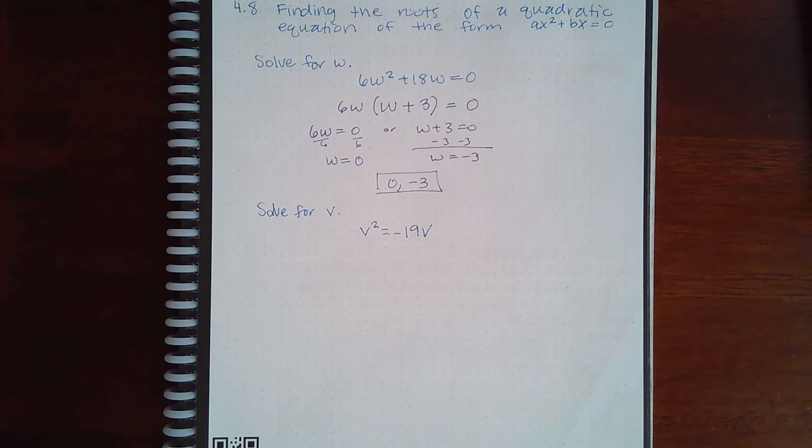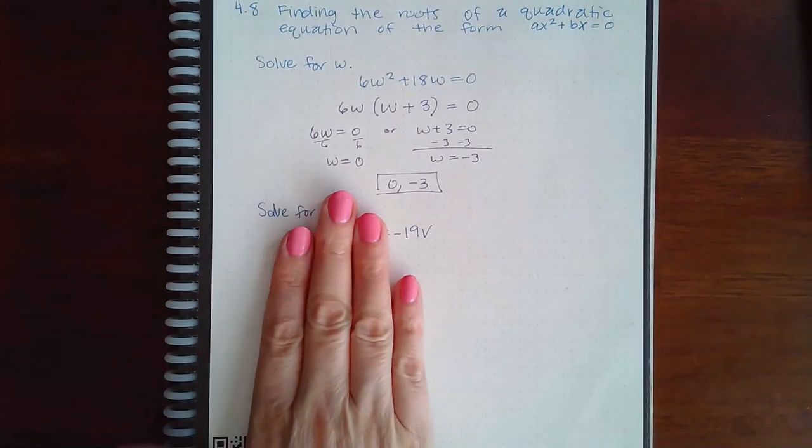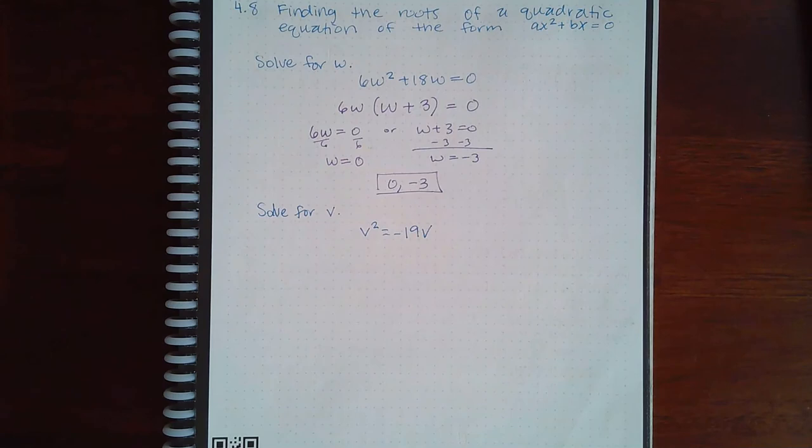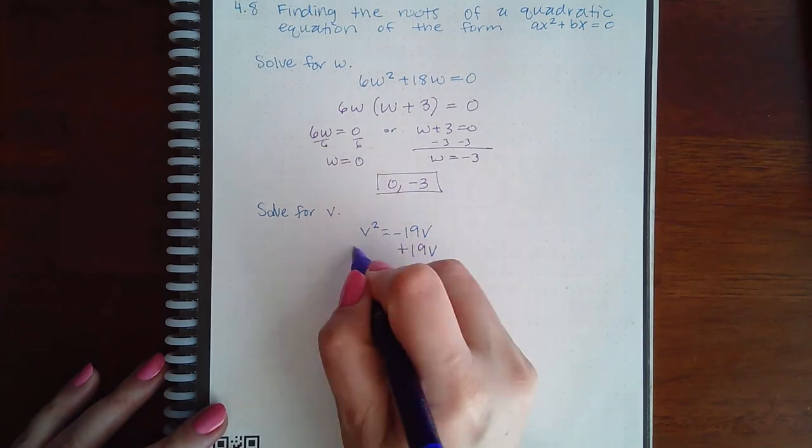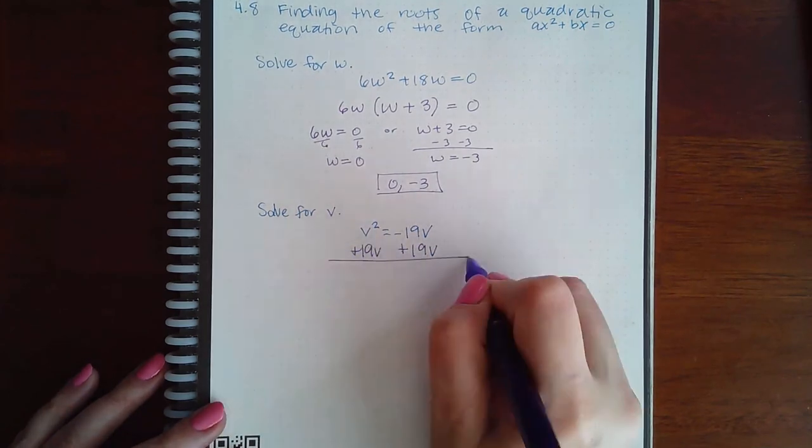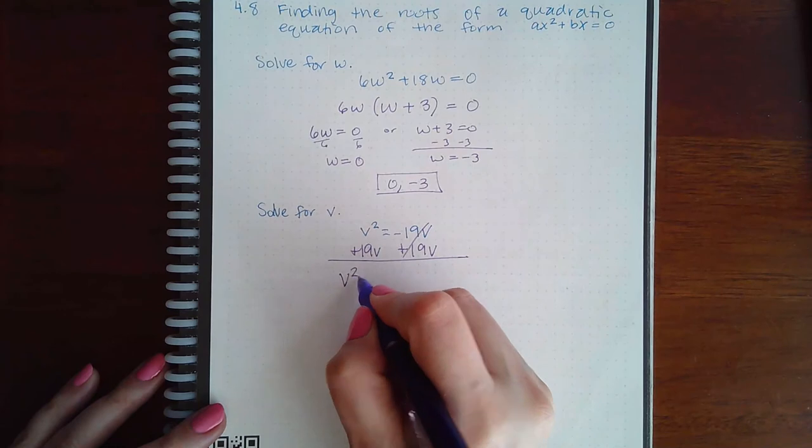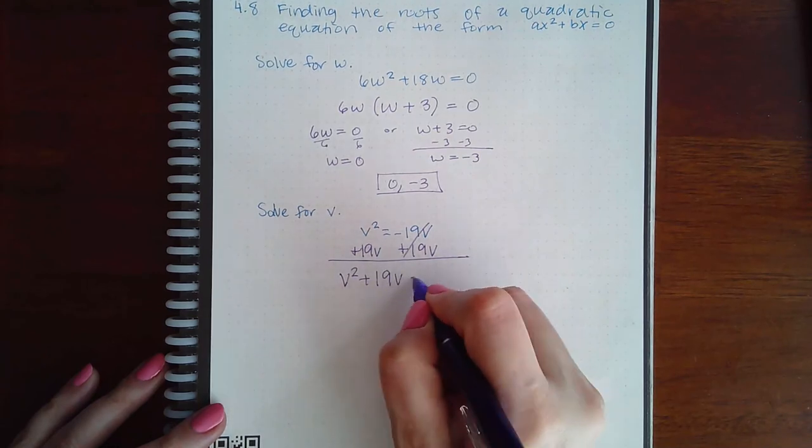Now I can't factor one term and one term. So the first issue to fix is get it equal to zero. Once you have it equal to zero, you'll have multiple terms, and then you can factor those multiple terms. To do that, I'm going to add 19 v to both sides. When I do that, I get v squared plus 19 v equal to zero.